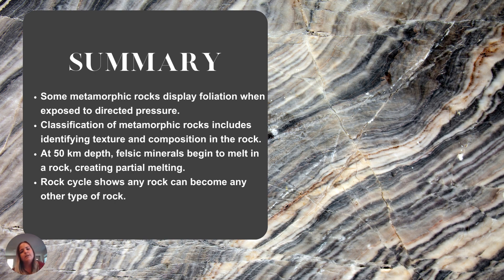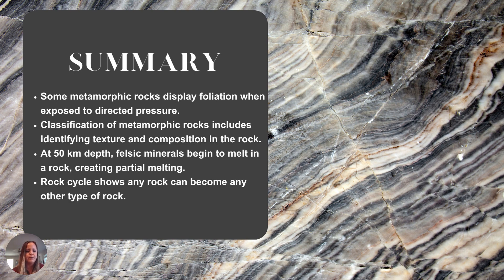To summarize: some metamorphic rocks display foliation from directed pressure, and some are non-foliated. We classify these rocks based on their texture and composition. As we approach that 50-kilometer mark, we start to see felsic minerals melt, creating partial melting. As always, the rock cycle shows that any rock can become any other type of rock. I will see you guys in the next video — bye!